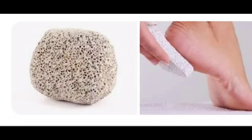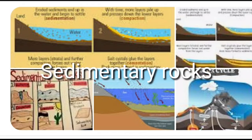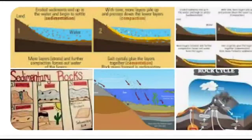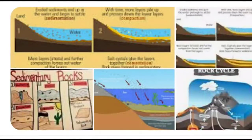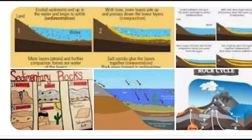The other rock type is sedimentary rocks. How are sedimentary rocks formed? The wind and water break the rocks into pieces. These pieces of rocks are carried along and deposited on the earth's surface. As more and more sediments are deposited, the weight turns them into rocks. This is called sedimentary rocks.